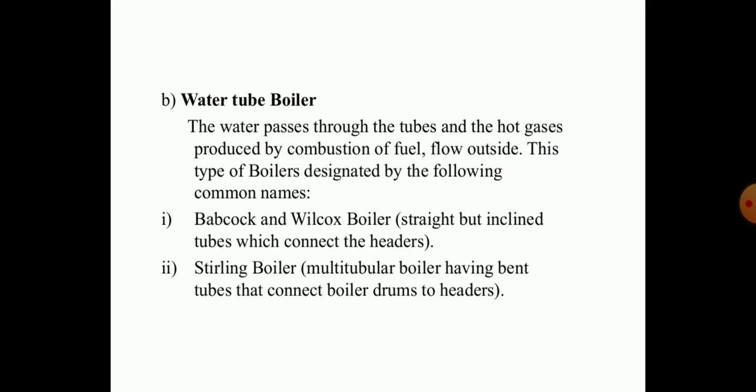Water tube boilers have a different arrangement in which water passes through the tubes and the hot gases produced by combustion of fuel flow outside. These boilers are designated by names of the scientists who invented them. The Babcock and Wilcox boiler uses straight but inclined tubes connected to headers, while Stirling boilers use a multi-tubular arrangement with bent tubes connected to boiler drums or headers.